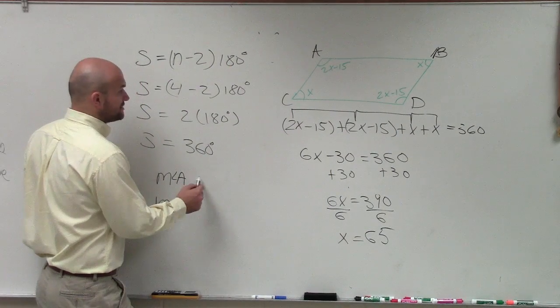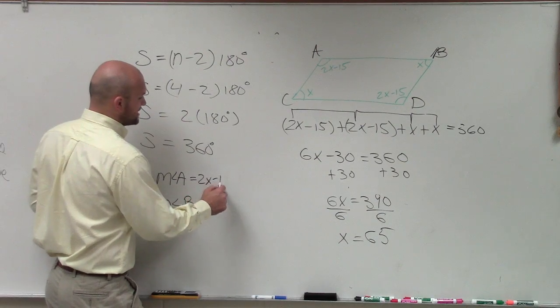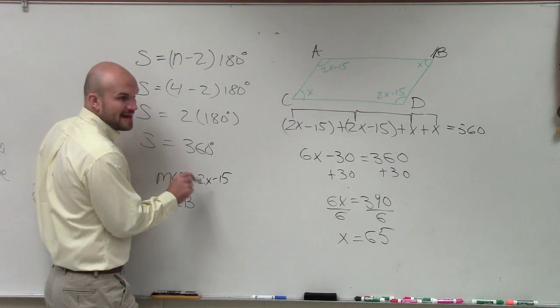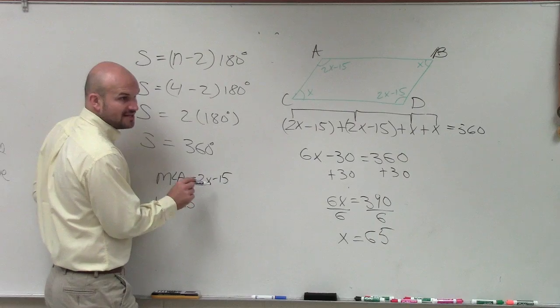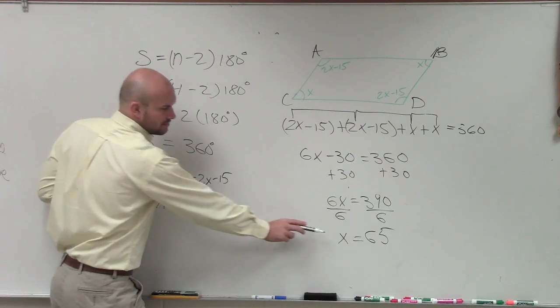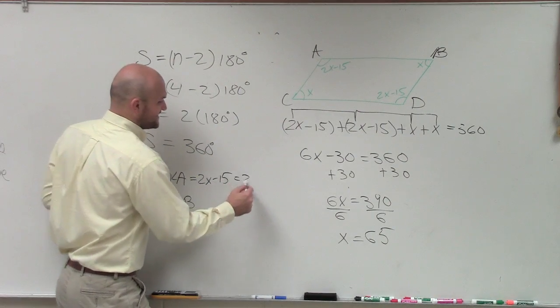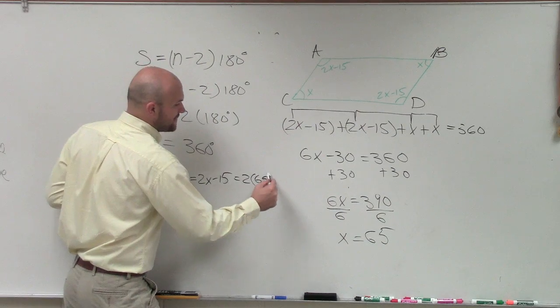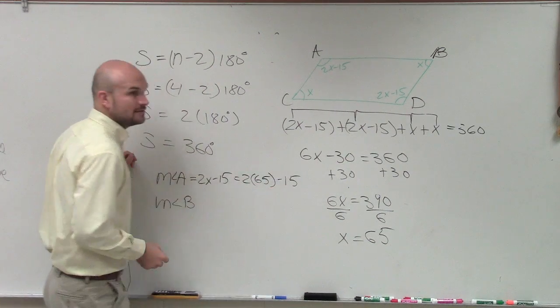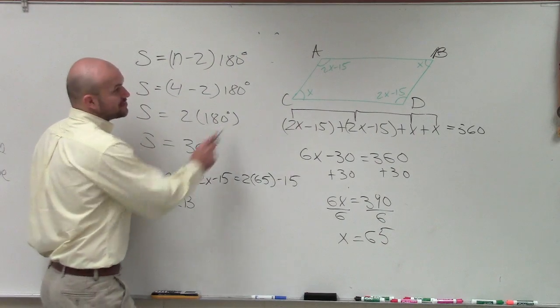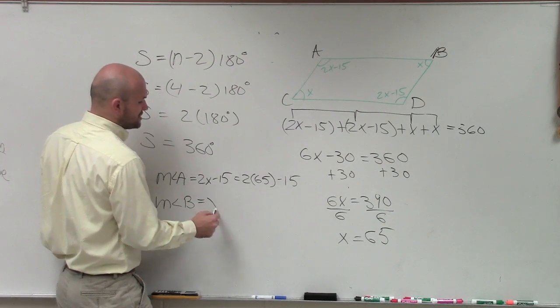So A, what you'd have to do, since the measure of angle A is equal to 2x minus 15. But do we now know the measure of x, the value of x? Yes. So it's 2 times 65 minus 15. And measure of angle B, well, the measure of angle B is just x. Well, that just equals 65. That one's easy.